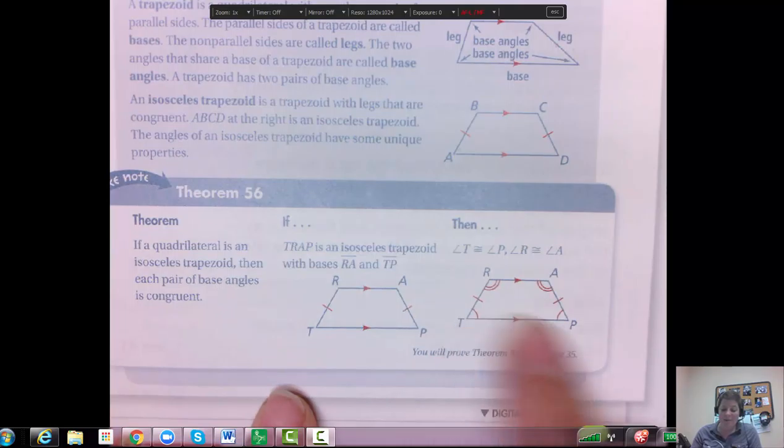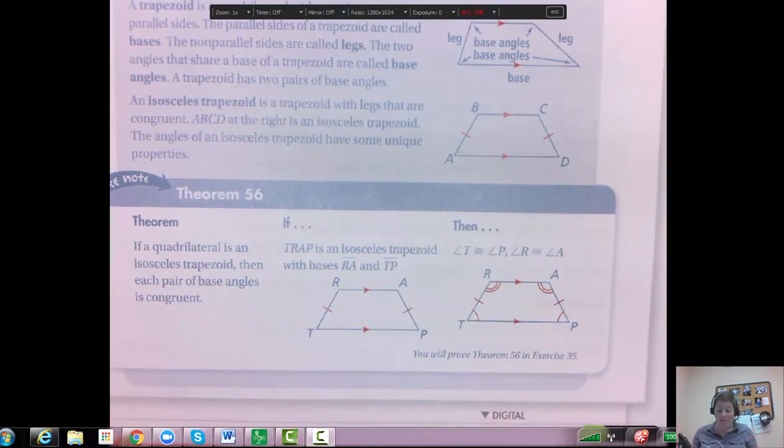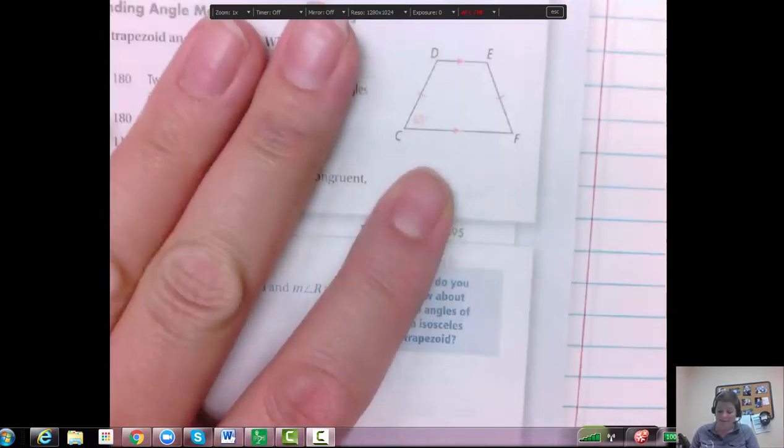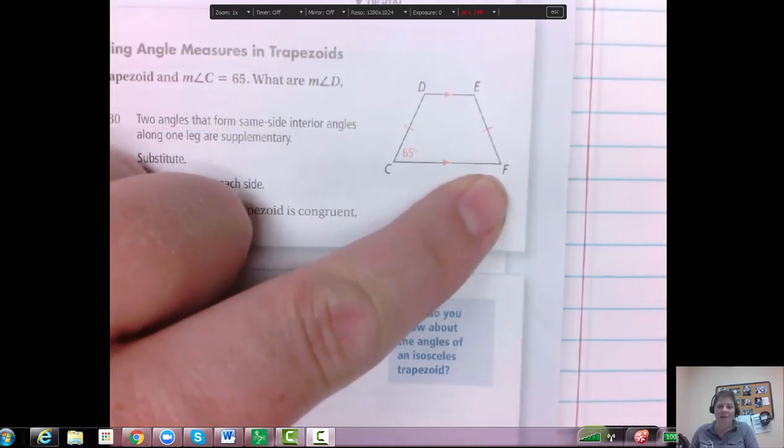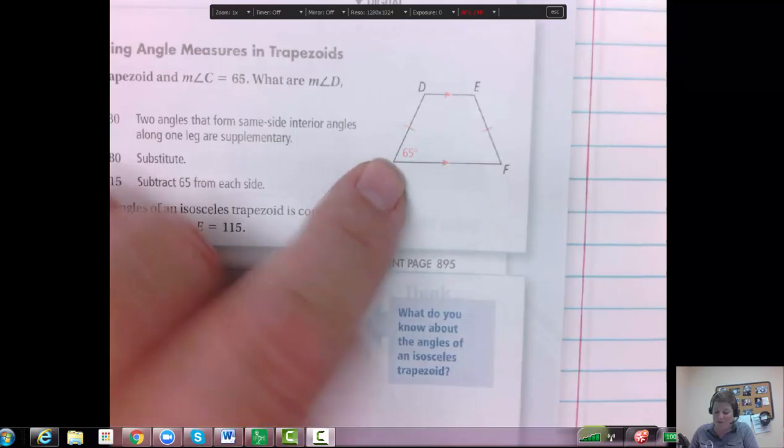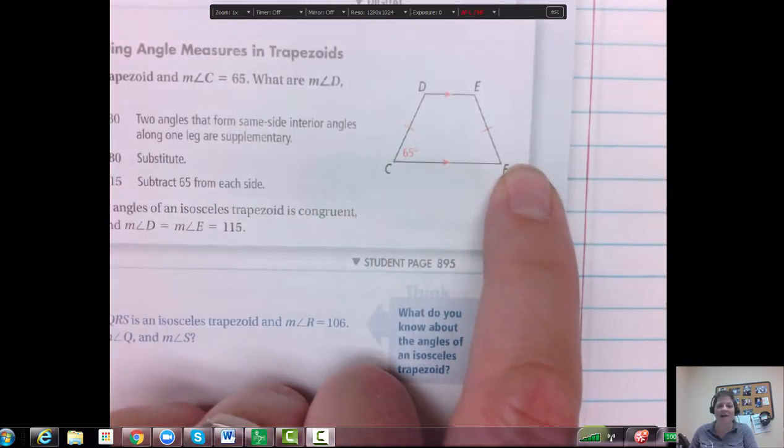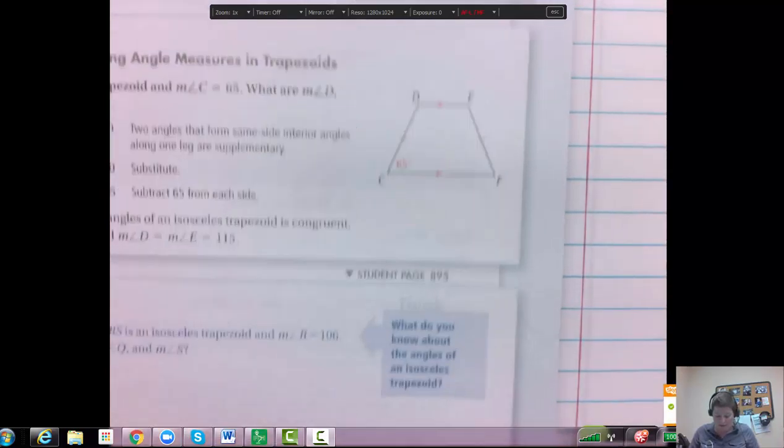So you might have a problem like this one and it'll say, okay, well what's angle F? Well, you know they're isosceles and you know this one's congruent to this one, so this one would have to be 65 degrees. So pretty basic questions like that you'll see.